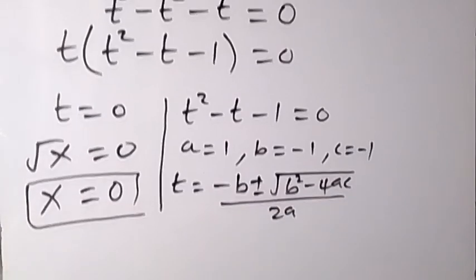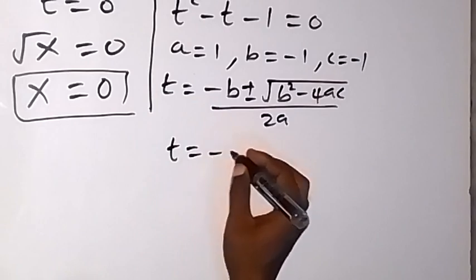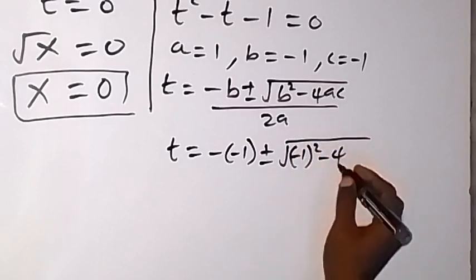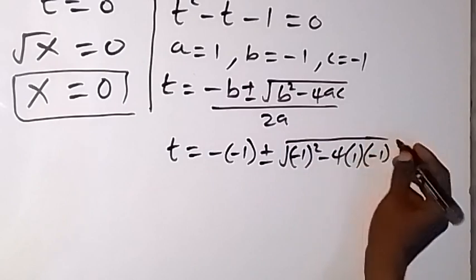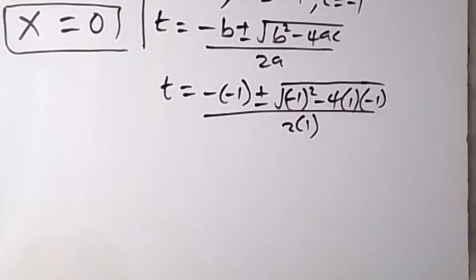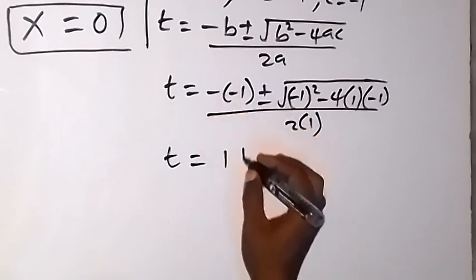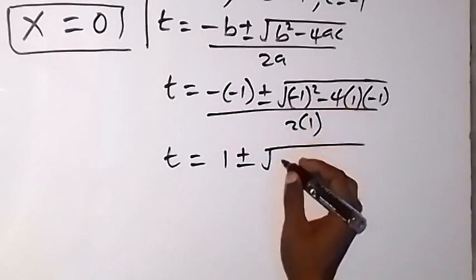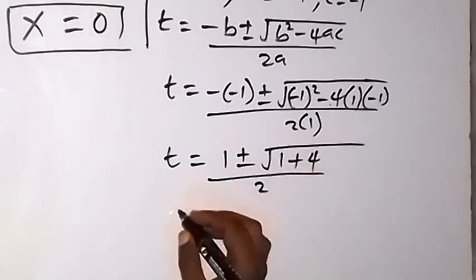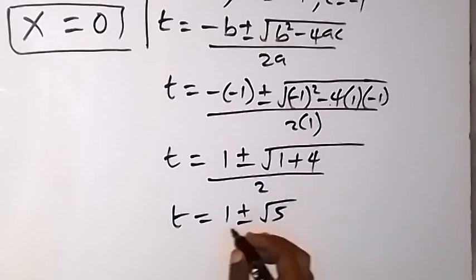Substituting, t = (-(-1) ± √((-1)² - 4·1·(-1))) / (2·1). Simplifying: t = (1 ± √(1 + 4)) / 2, which gives t = (1 ± √5) / 2.